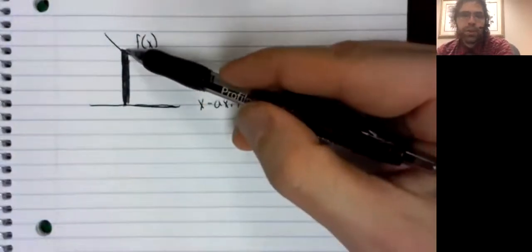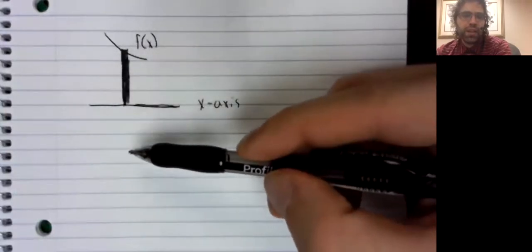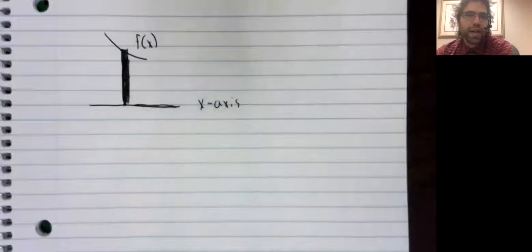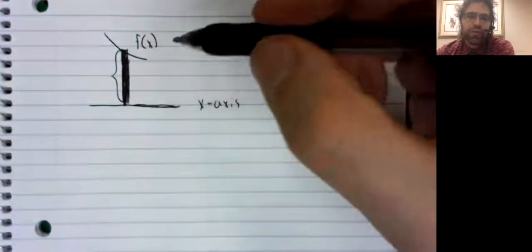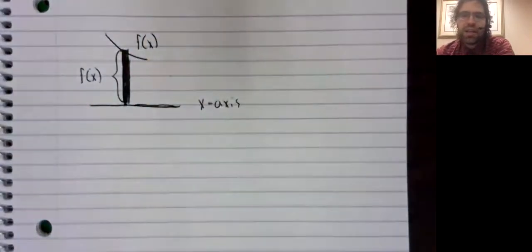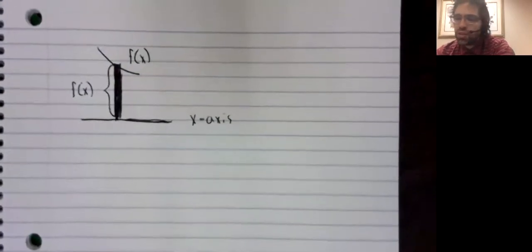And when we took such a rectangle and rotated it around the x-axis and got a cylinder, the function f(x) became the radius of the cylinder.